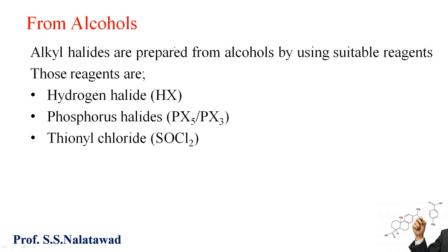Alkyl halides are prepared from alcohols by using suitable reagents. Those reagents are hydrogen halide (HX), phosphorus halide, and thionyl chloride. Let us try to understand what type of reaction takes place when alcohol reacts with these three reagents.